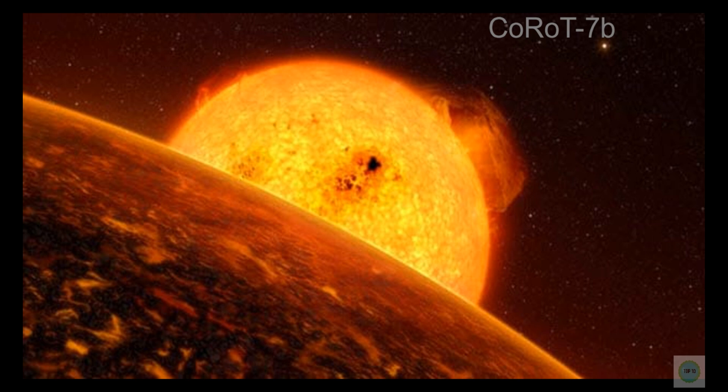Number 9 is Corot 7b. In February 2009, astronomers operating the convection, rotation and planetary transits satellite found another exoplanet in the Monoceros constellation 480 light-years from Earth. They called it Corot 7b. Corot 7b is a rocky, Earth-like exoplanet, despite the fact that it used to be a Saturn-sized hot Jupiter, a term used to describe the colossal gas-filled planets outside our own solar system with tight orbits around their stars.